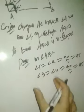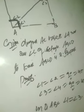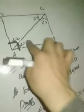Now in triangle ABC: angle 1 is 45° and angle 3 is 45°, so angle 1 equals angle 3. You know that if in a triangle two angles are equal, their opposite sides are also equal. The side opposite to angle 1 is BC, and the side opposite to angle 3 is AB.